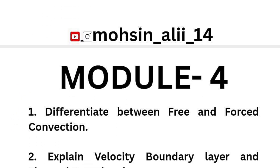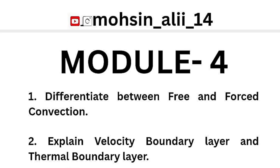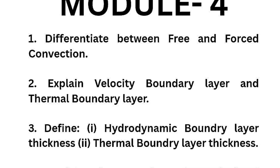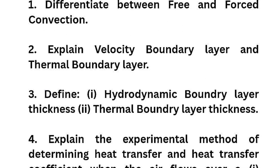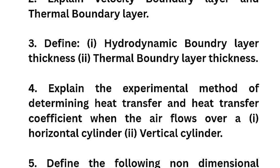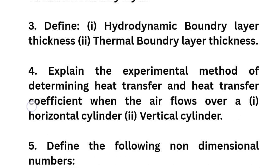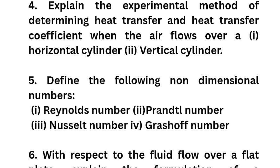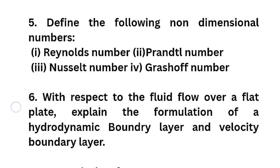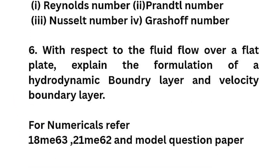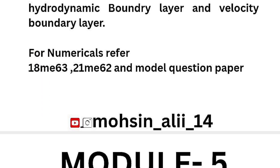Module four is again a passing module. Topics include: differentiate between free and forced convection; explain velocity boundary layer and thermal boundary layer; define hydrodynamic boundary layer thickness and thermal boundary layer thickness; explain the experimental method of determining heat transfer coefficient when air flows over a horizontal and vertical cylinder; define non-dimensional numbers — Reynolds number, Prandtl number, Nusselt number, and Grashof number — with respect to fluid flow over a flat plate; explain the formulation of hydrodynamic and velocity boundary layers. For numericals, refer to 18ME63, 21ME62, and model question papers.